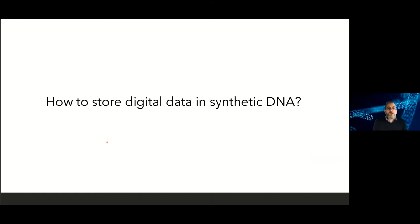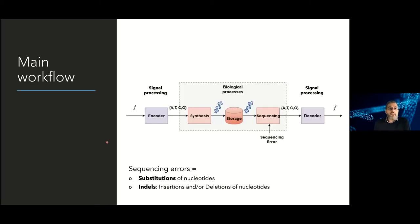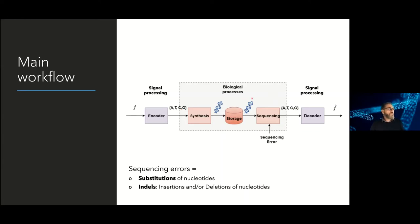The big question is how to store digital data into synthetic DNA. The main workflow has a biological process in the middle and signal processing operations on either side. First, we take a signal — let's say images — and convert these images, given in binary, into a quaternary code composed of the four symbols ATCG. At the decoder side, thanks to signal processing operations, we are able to recover at least an approximation of the input signal, ideally exactly the input image.